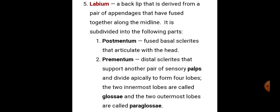Labium के parts हैं: postmentum — fused basal sclerites that articulate with the head; और prementum — distal sclerite that supports sensory palps and divides apically to form four lobes। The two innermost lobes are called glossae and the two outermost lobes are called paraglossae। अंदर के दो lobes को glossae और बाहर के दो lobes को paraglossae कहते हैं।